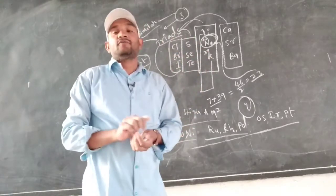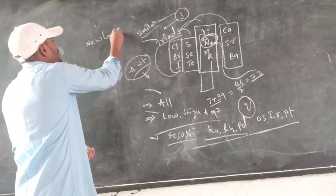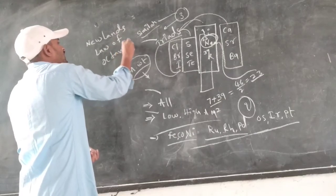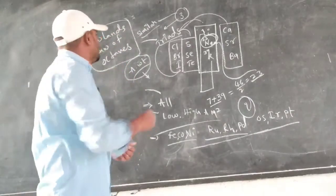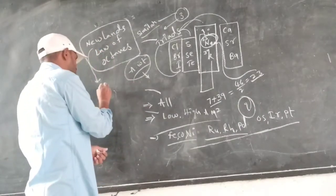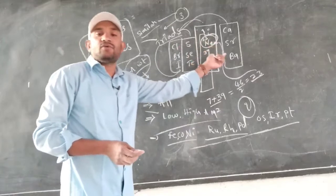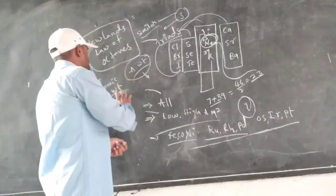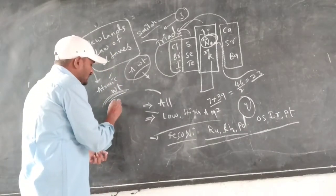After Dobereiner's Law of Triads, one more scientist came out — Newlands. Newlands' Law of Octaves is one more classification. Newlands also classified the elements on the basis of atomic weight, just as Dobereiner did on the basis of atomic weight.